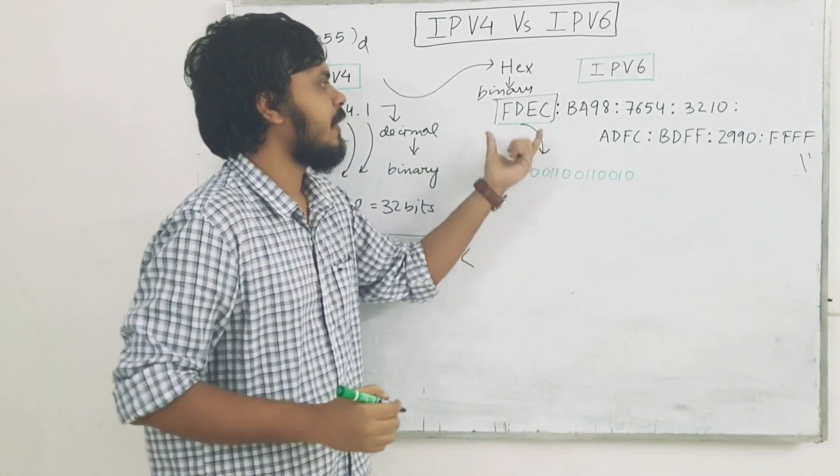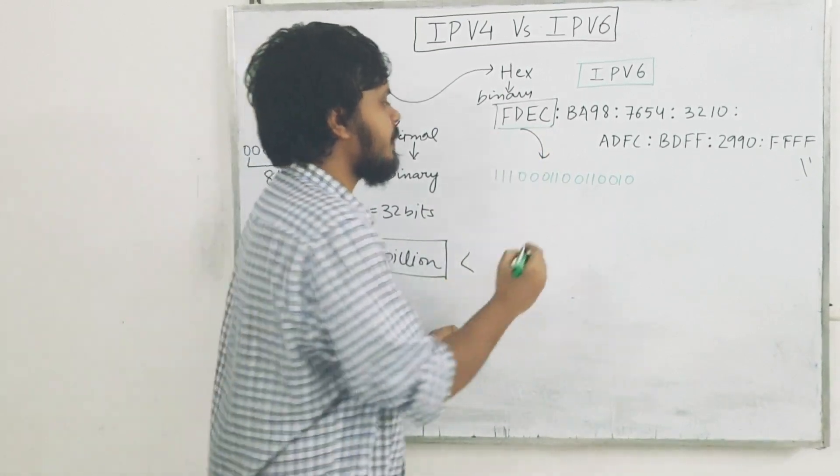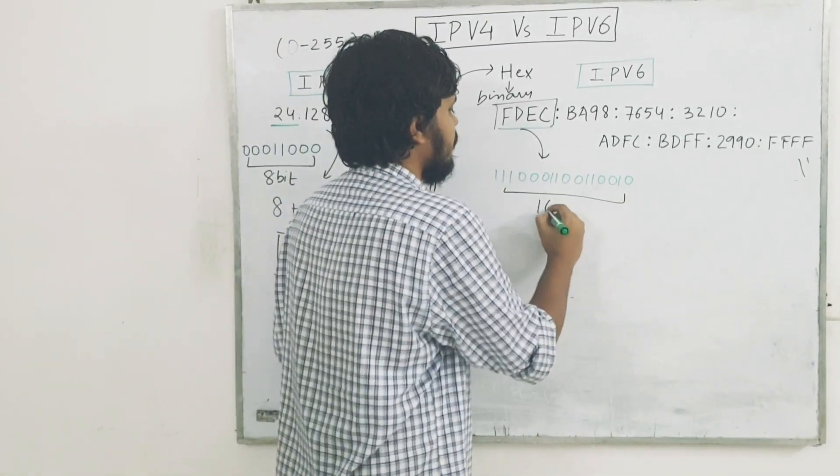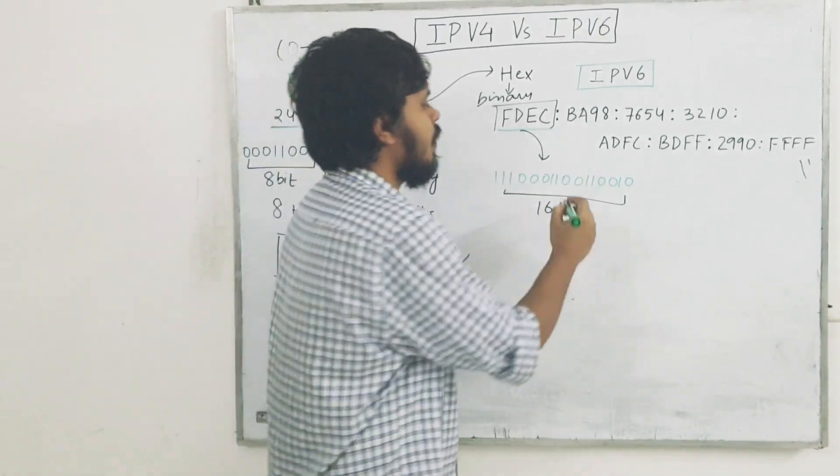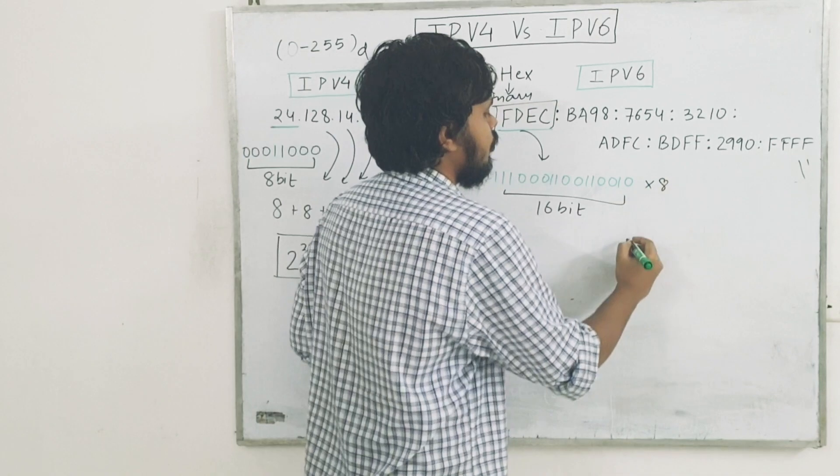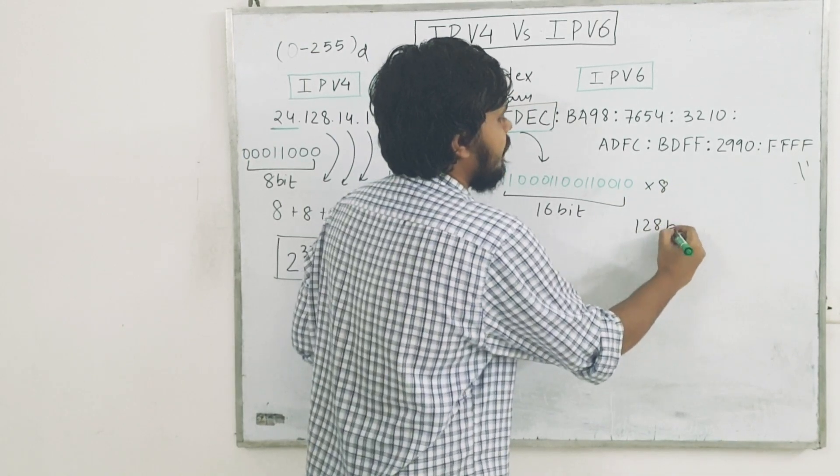IPv6 for every single hexadecimal number, you get a 16-bit number, 16-bit binary pattern. And if it is 8, then, total is 128-bit pattern.